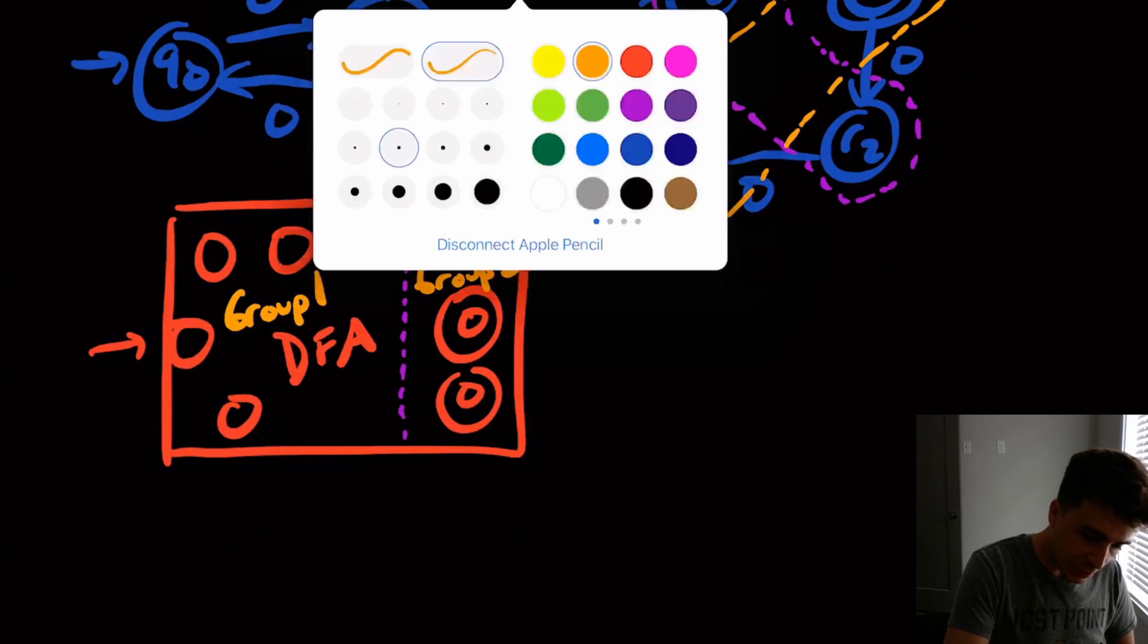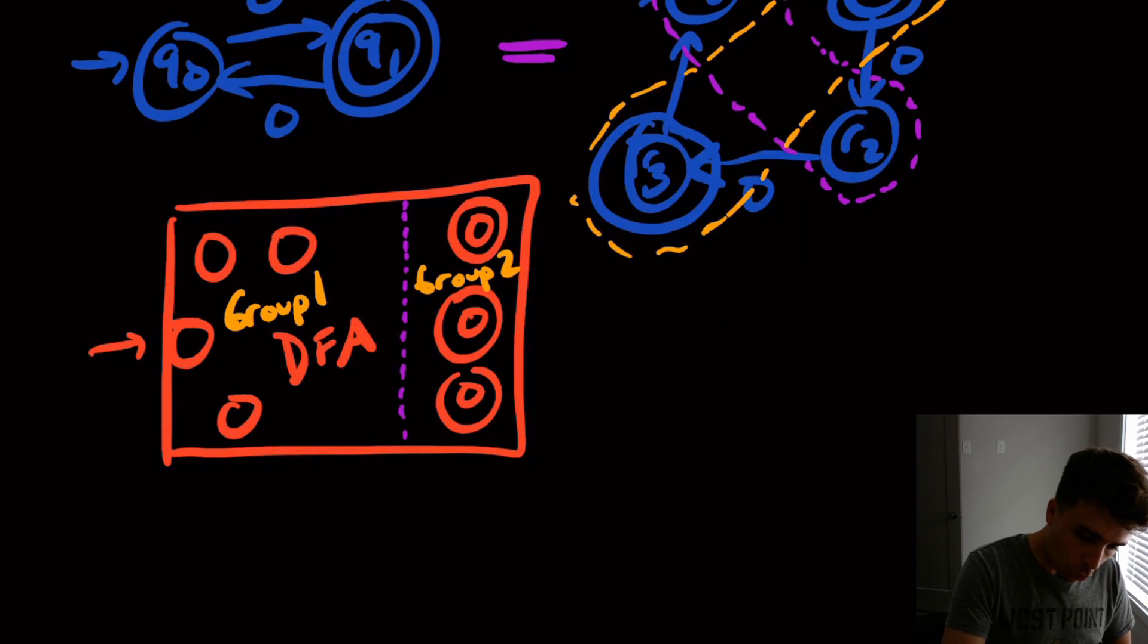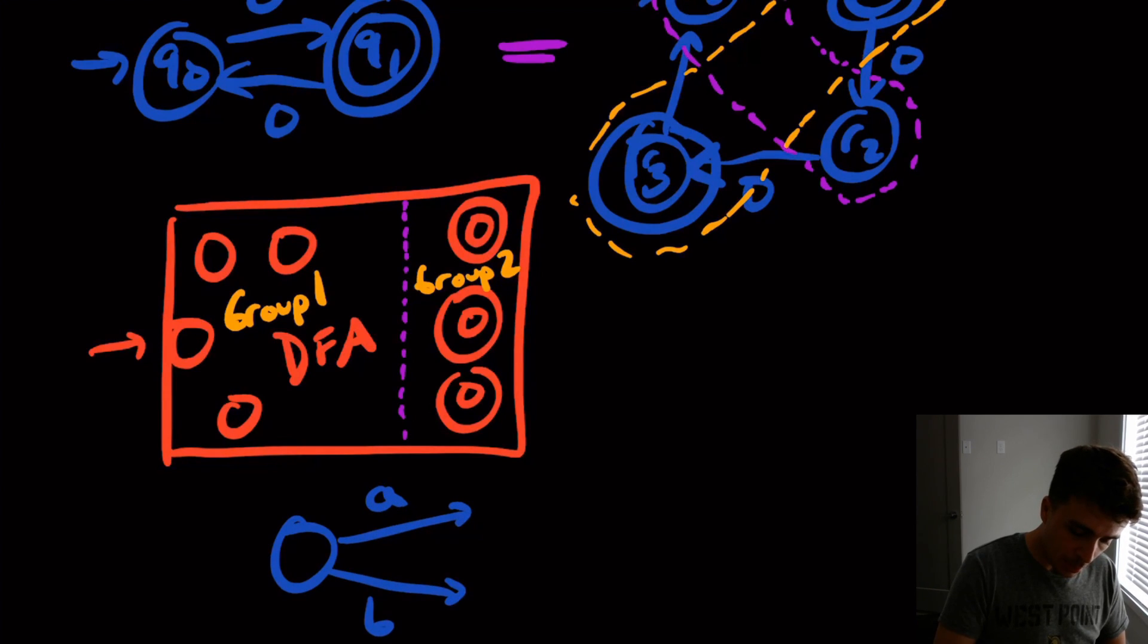So now let's consider some scenarios. So let's say that in group one over here, we have one state have a transition on A and B, and they happen to go to these two states.